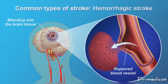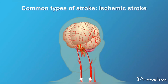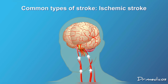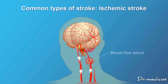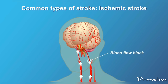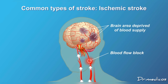The second, more common type of stroke is called ischemic stroke. It occurs when a blood vessel — an artery carrying blood to the brain — becomes blocked. Without blood supply, brain cells deprived of oxygen and nutrients can start to die within a few minutes.